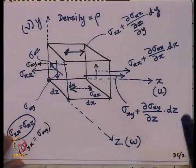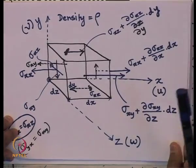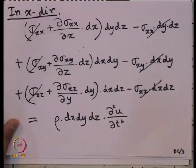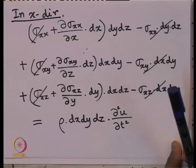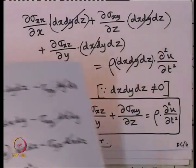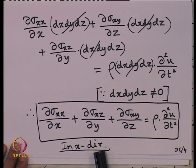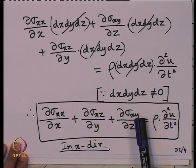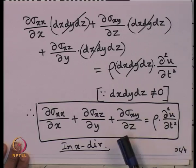We had seen the derivation of three-dimensional wave propagation. For three-dimensional wave propagation in the x-direction, based on the equilibrium of all the forces, we arrived at the governing equation of motion: del sigma_xx by del x plus del sigma_xz by del y plus del sigma_xy by del z equals rho times del² u by del t², where u is the displacement in the x-direction and rho is the density of the material.